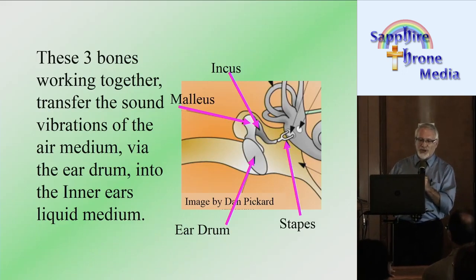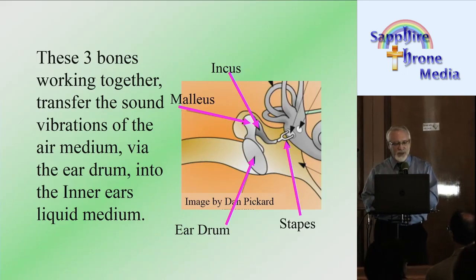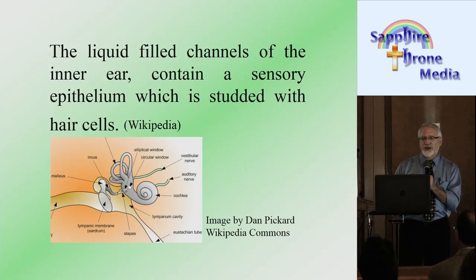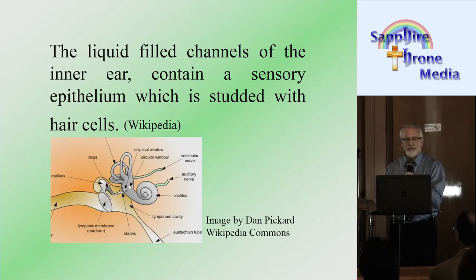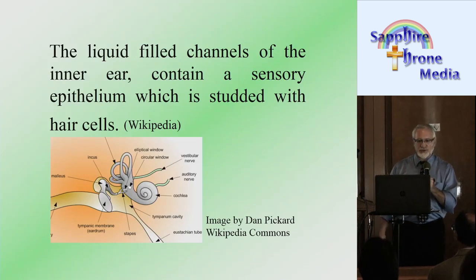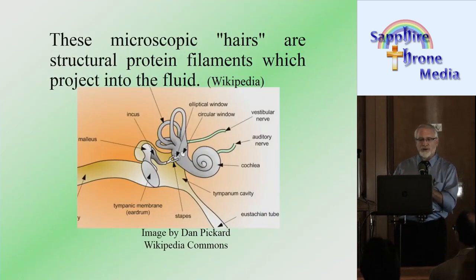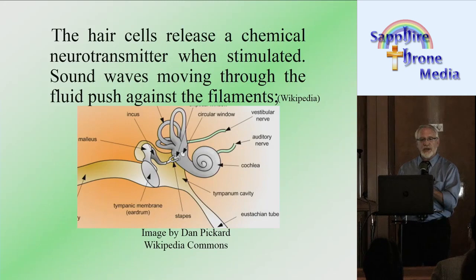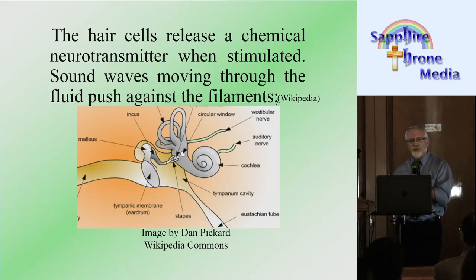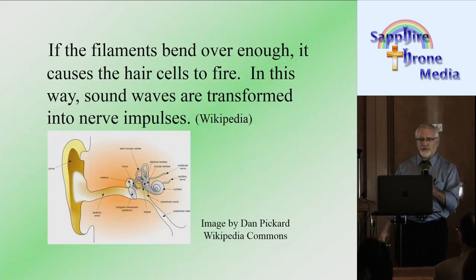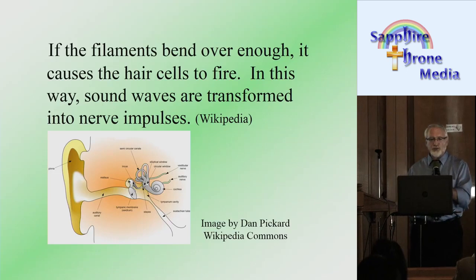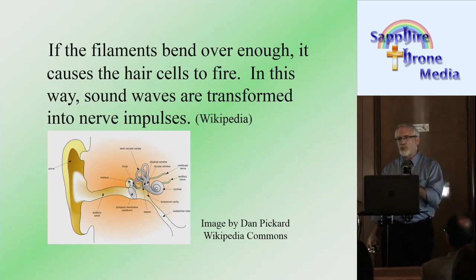These three bones working together transfer the sound vibrations from the air medium via the eardrum into the inner ear's liquid medium. The liquid-filled channels of the inner ear contain a sensory epithelium studded with hair cells. These microscopic hairs are structural protein filaments which project into the fluid. The hair cells release a chemical neurotransmitter. Sound waves moving through the fluid push against the filaments, and if the filaments bend over enough, it causes the hair cells to trigger or fire — transforming sound waves into nerve impulses.